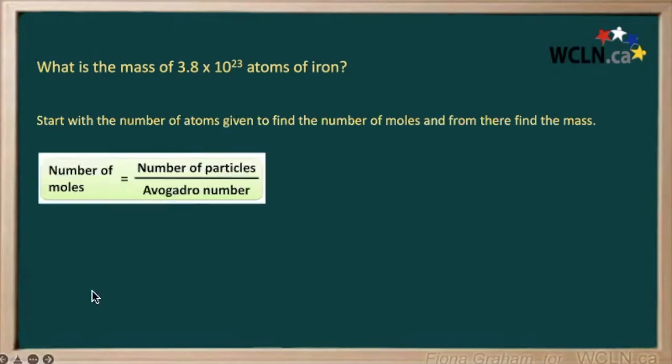So we know we can use this formula here to find our number of moles. We simply take our number of particles, which is 3.8 times 10 to the 23, and divide it by Avogadro's number, which is 6 times 10 to the 23. This gives us 0.63333 moles of iron.